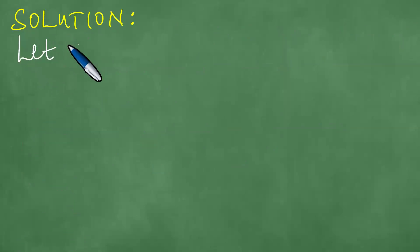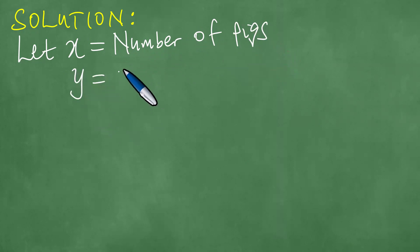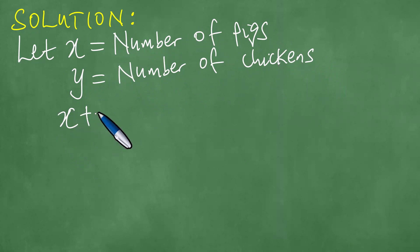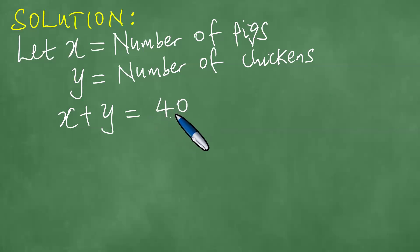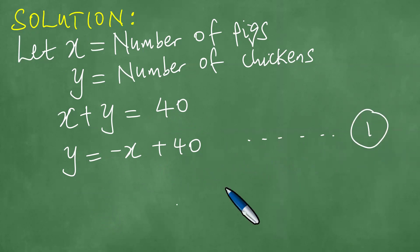We let X be equal to the number of pigs, and Y becomes the number of chickens. Now there are 40, meaning that the sum of the number of pigs and chickens is 40, so X plus Y equals 40. The implication of this is therefore that Y equals minus X plus 40. Let us call this the first algebraic equation.